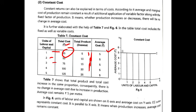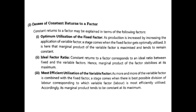Next are the causes of constant returns to a factor. The first cause is optimum utilization of the fixed factor. When production is increased by increasing the application of the variable factor, variable factors are applicable and total product increases. At this stage, the fixed factor reaches optimum utilization — and when that happens, the marginal product of the variable factor starts to increase at a constant rate.